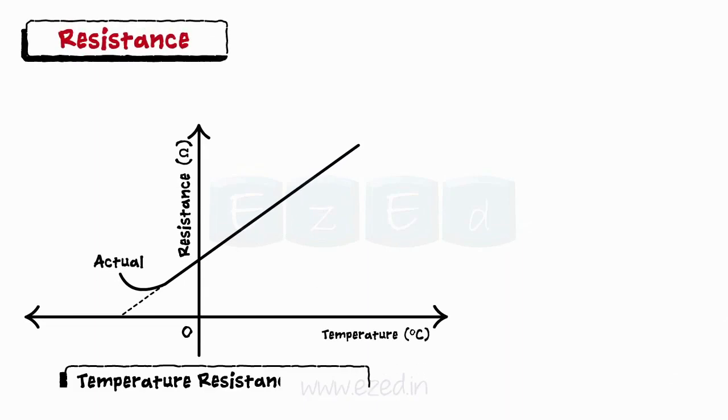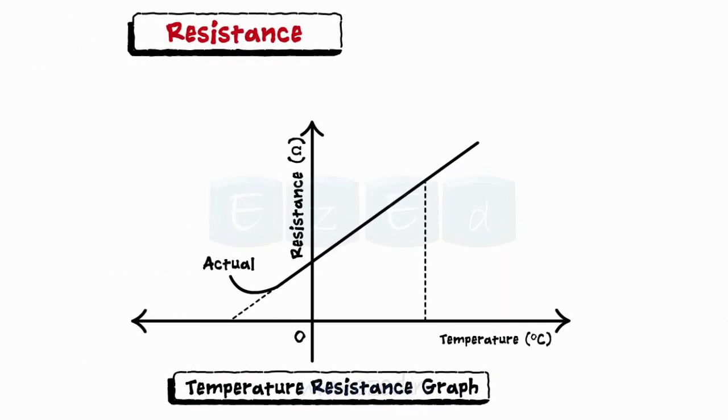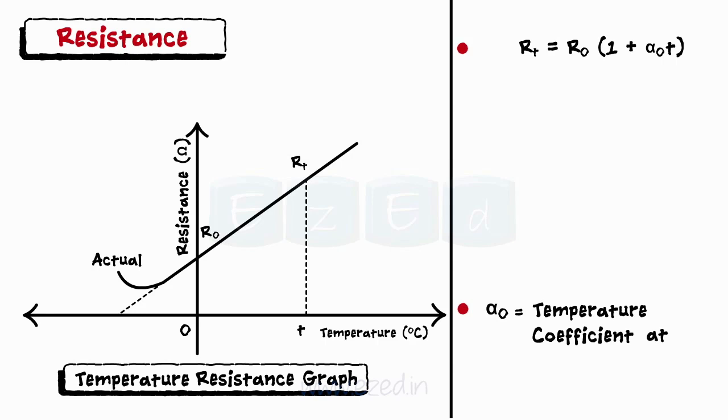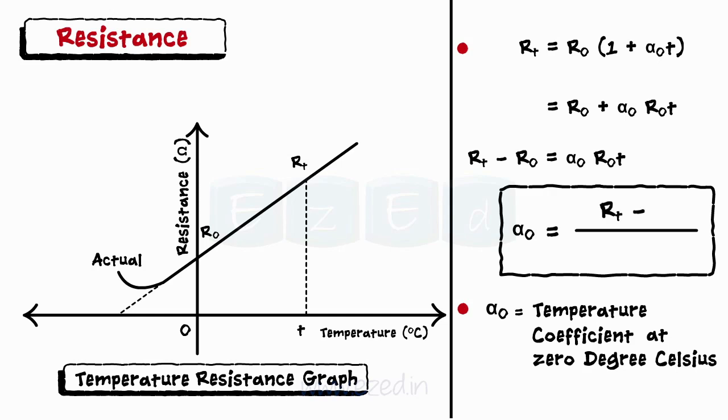Consider a temperature resistance graph for a pure metal. At 0 degree Celsius, the resistance is R0 Ohms and at any temperature T, it is RT Ohms. Thus, the difference between two resistances is proportional to R0 into T. Thus, RT is equal to R0 into 1 plus alpha 0 T, whereas alpha 0 is called as a temperature coefficient at 0 degree Celsius and is given as RT minus R0 upon R0 into T.